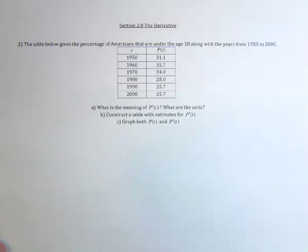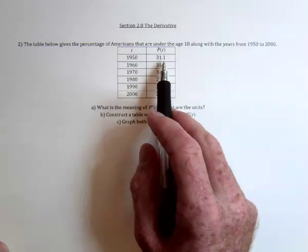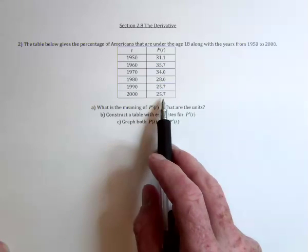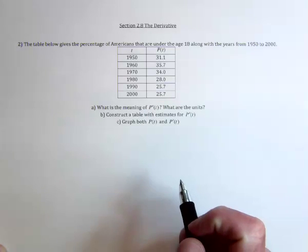So this information is about the percent of Americans that are under the age of 18. Over the years, in general, less and less are young as the population gets older.